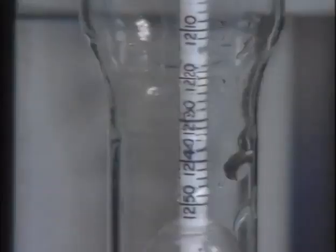Inside the barrel is a weighted float with a graduated scale. The scale markings indicate values of specific gravity. In this example, the scale is marked off in increments of .002.